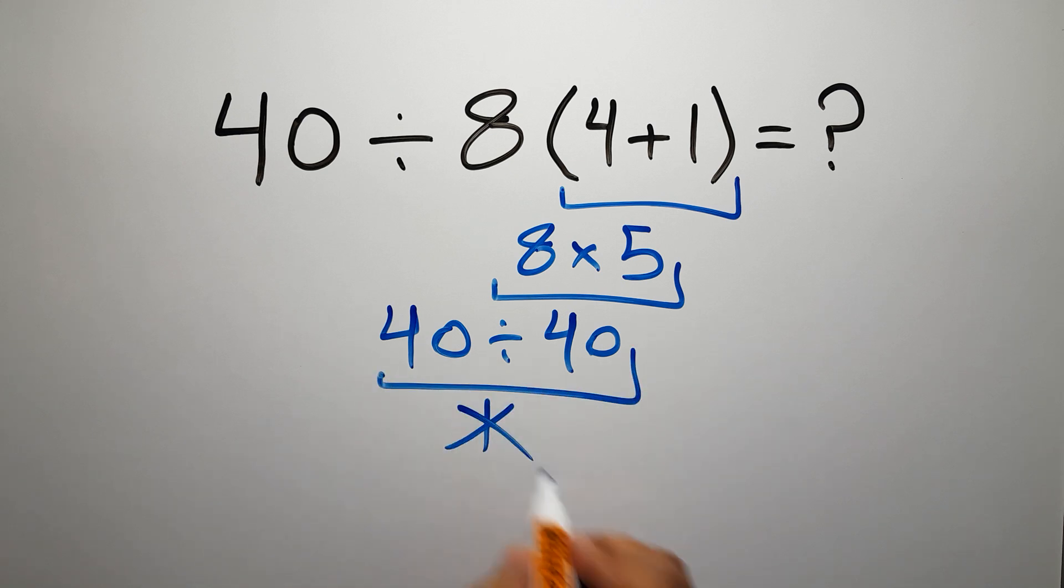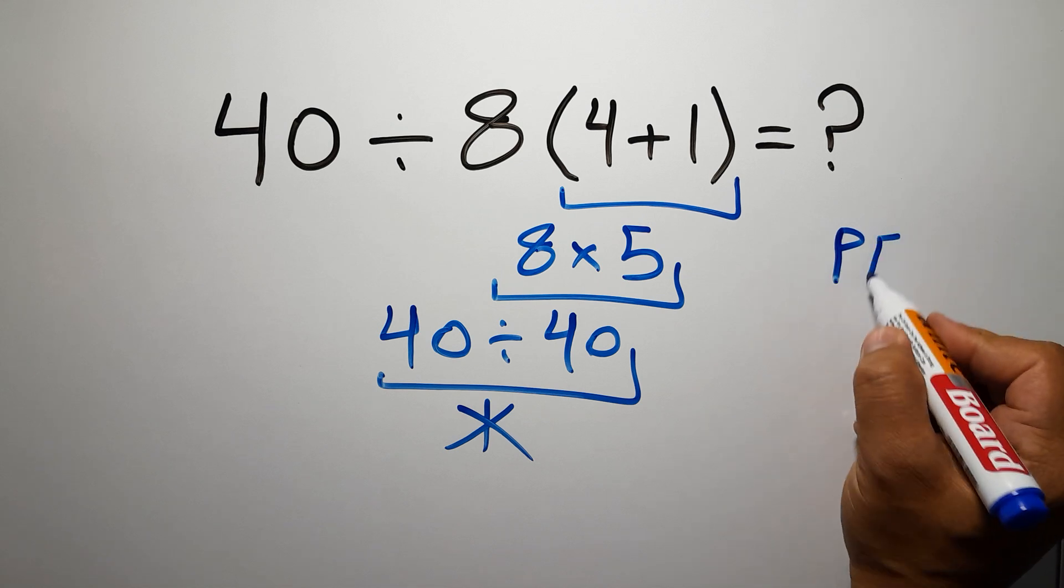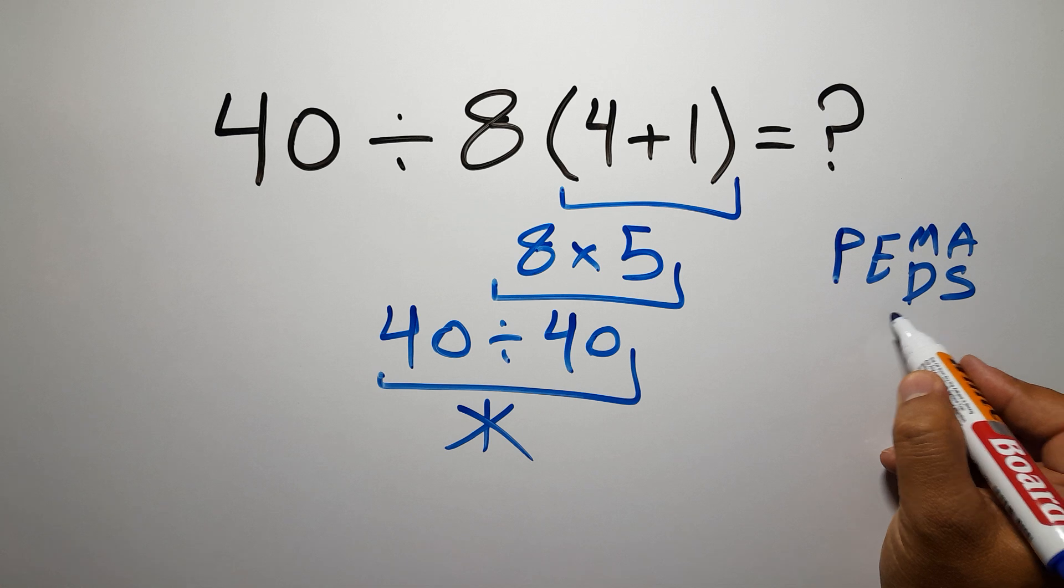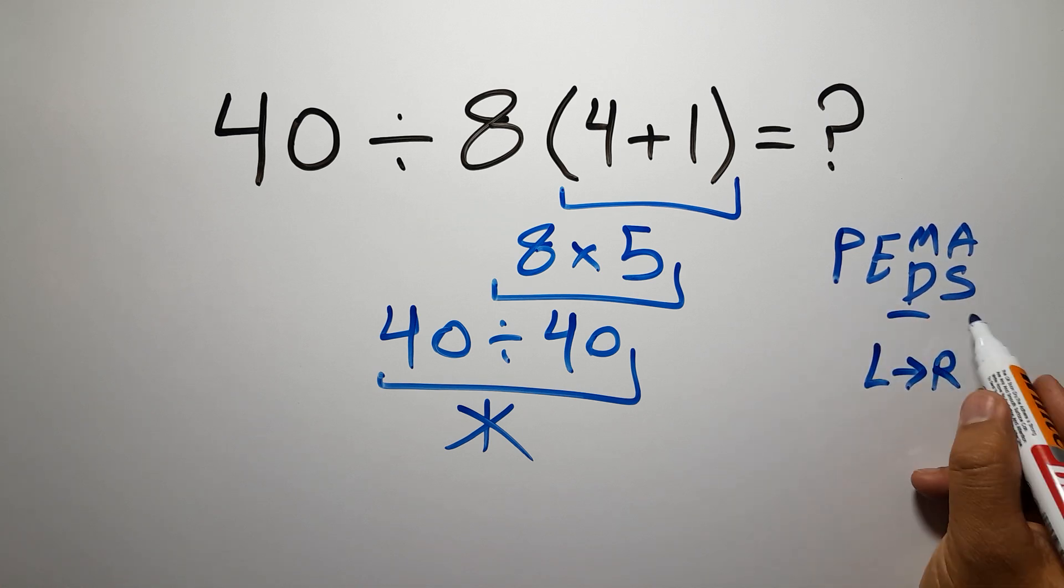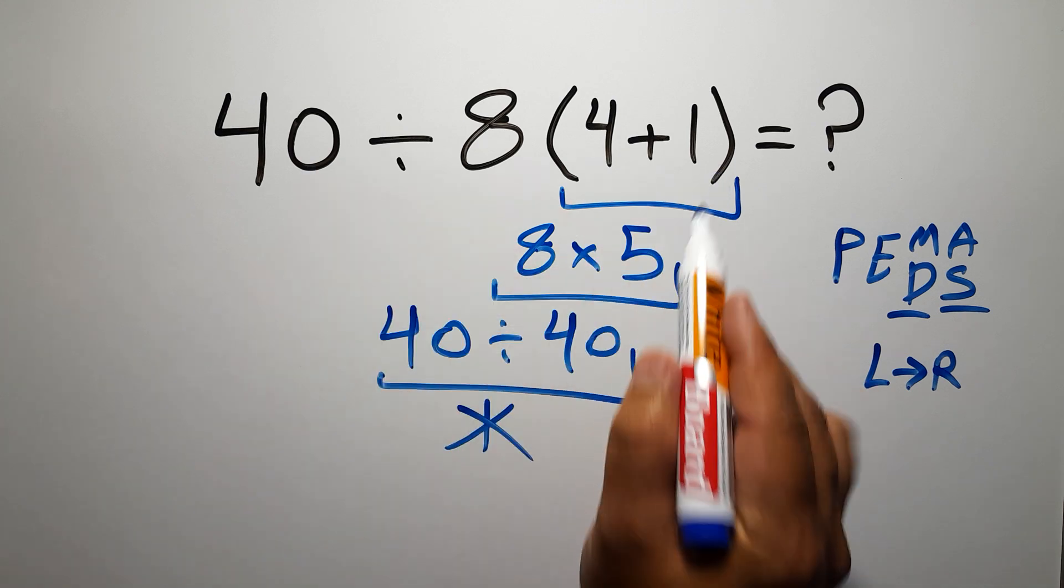According to the order of operations, first we have to do parentheses, then exponents, then multiplication or division, and finally addition or subtraction. Remember that multiplication and division have equal priority and we have to work from left to right. The same applies to addition and subtraction.